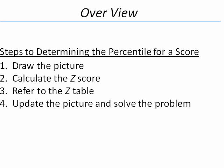Second, we're going to need to calculate a z-score to find out the number of standard deviations between the given value and the mean. Our third step will be to refer to the z-table to find out the area or proportion of people between the mean and z. And finally, our fourth step will be to update the picture to solve the problem.